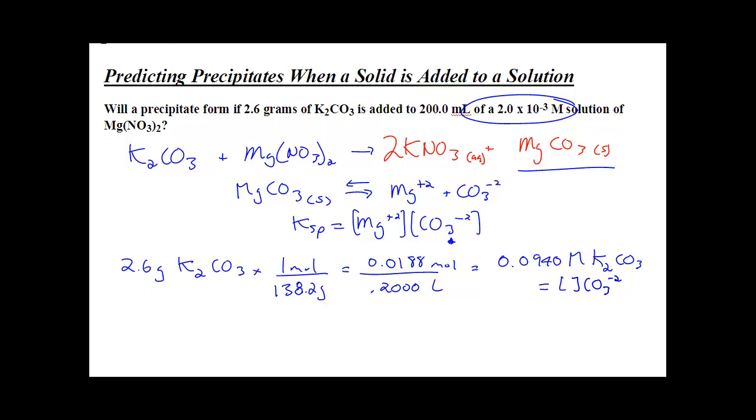The molar mass is 138.2. And the moles is 0.0188 divided by 0.2, gives me a concentration of 0.940 big M K2CO3. Now we don't care about the K2, we care about the CO3. So this actually equals the concentration of CO3, which is what we want. We need to get the concentration of Mg. Well, it's actually given to us in the question already. What's circled? 2 times 10 to the negative 3 molar MgNO3. There's a 1 to 1 ratio there of Mg. So the trial KSP equals 2.0 times 10 to the negative 3 times what we just calculated, 0.0940.